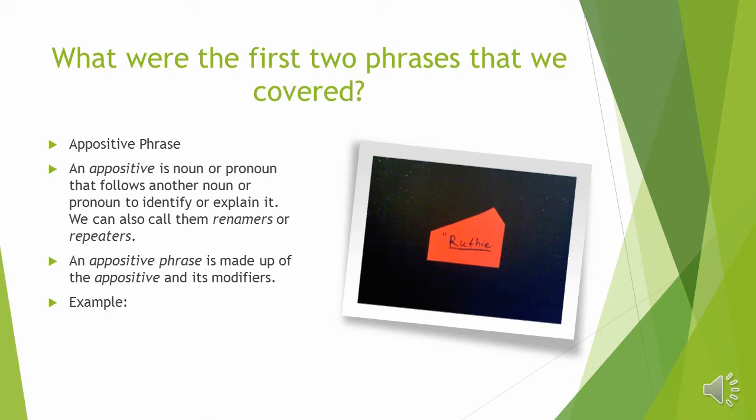What were the first two phrases that we covered? The first was the appositive phrase. An appositive is a noun or pronoun that follows another noun or pronoun to identify or explain it. I like to call these renamers or repeaters. They usually give information — usually characteristics about the noun. The appositive phrase is made up of the appositive and its modifiers.